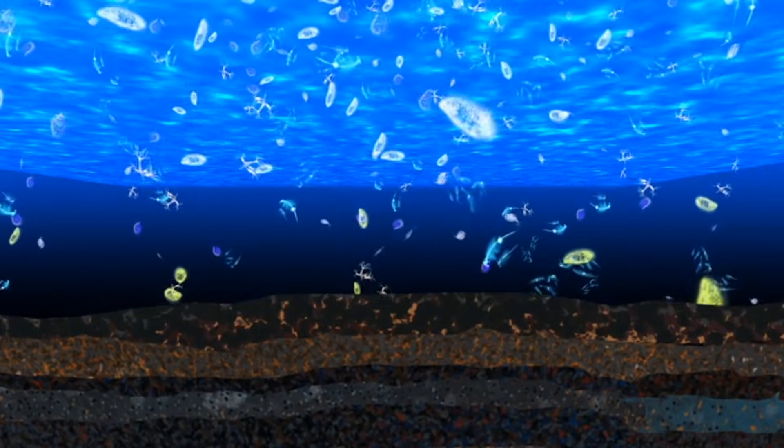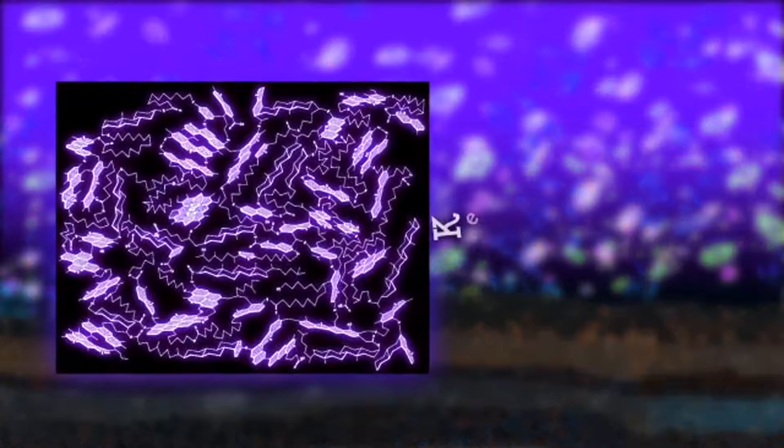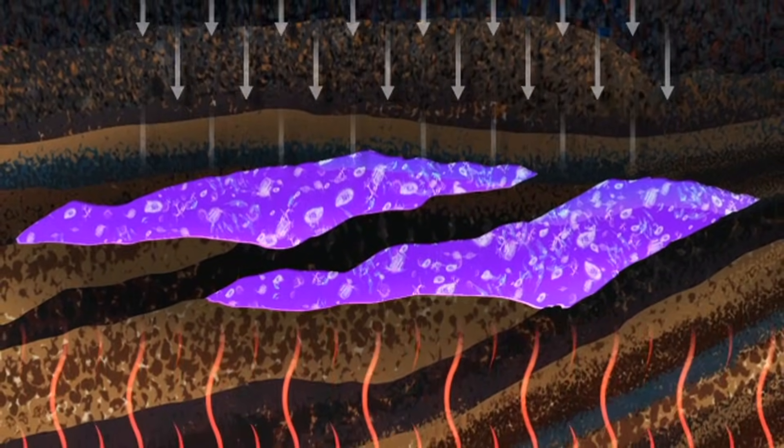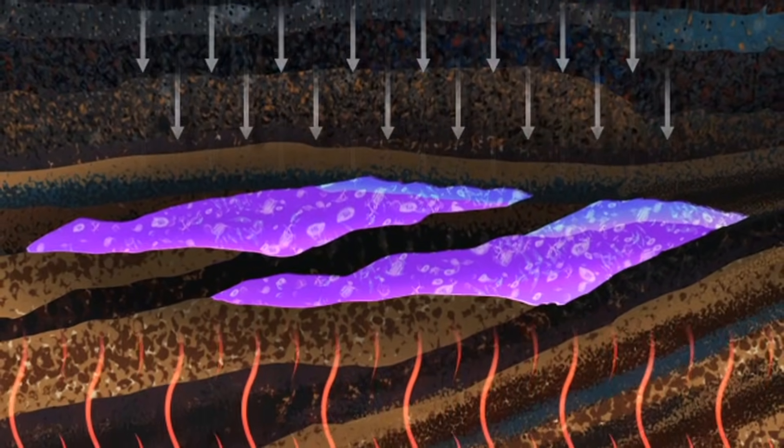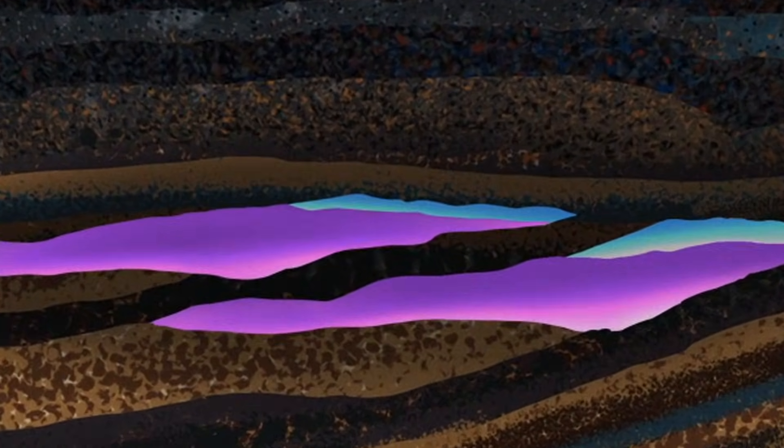Beneath other sediments in the ocean, and in the absence of oxygen, these fossils changed into a substance called kerogen. Under heat and pressure, kerogen gradually changes into oil or gas. The whole process usually takes at least a million years.